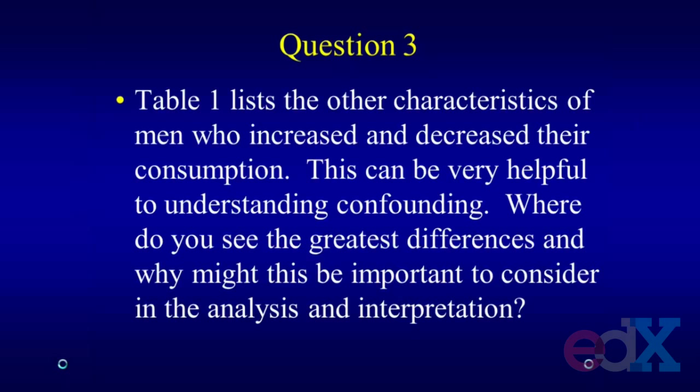So let's go on to question three, which starts to dig out some of the numbers in the tables. Table one lists characteristics of men who increased and decreased their consumption, and this can be very helpful to understand confounding. Where do you see the greatest differences and why might this be important? I would start with those factors most strongly related to the outcome — the strongest predictors of diabetes in any population would be body weight, weight gain, and in many cases smoking.